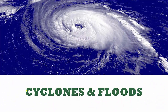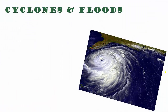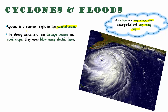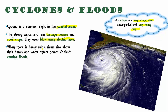Next, we will be talking about cyclones as well as floods. This is an aerial view of a cyclone that is visible from a satellite. A cyclone is a very strong wind accompanied by very heavy rain, and it is very common in coastal regions. The strong winds and rain can damage houses, spoil crops, and blow away electric lines. When there is heavy rain, river levels may increase above the bank and water enters into homes and fields nearby, causing floods. So cyclones ultimately lead to floods.